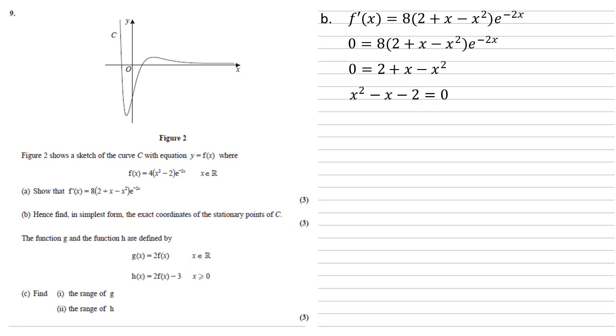Rearranging this, we get x squared minus x minus 2 equals 0. Well, this factorises to x minus 2, x plus 1, hence x must equal minus 1 and 2.